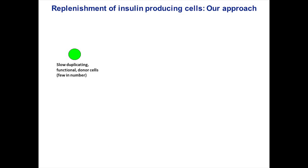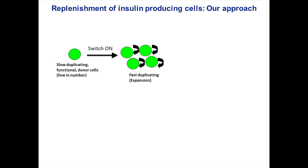The donor material for transplantation is typically obtained from adults, and several pioneering studies have shown that the insulin-producing cells from adults do not duplicate much, even though these cells know how to function. One idea can be to make these cells duplicate fast, but as we just learned, fast-duplicating cells typically do not function well.